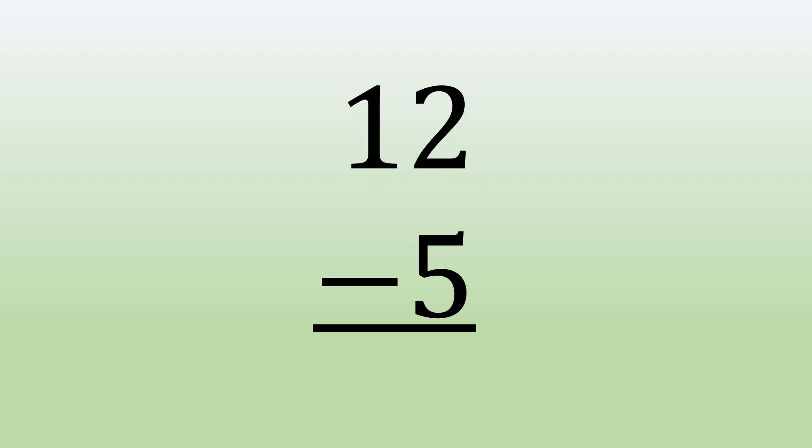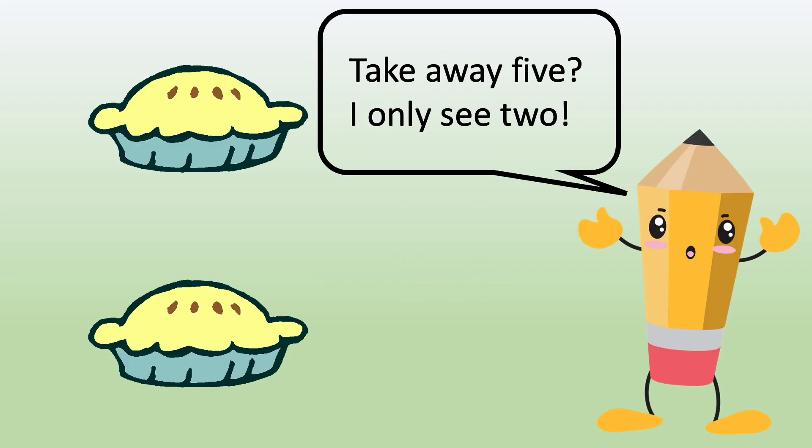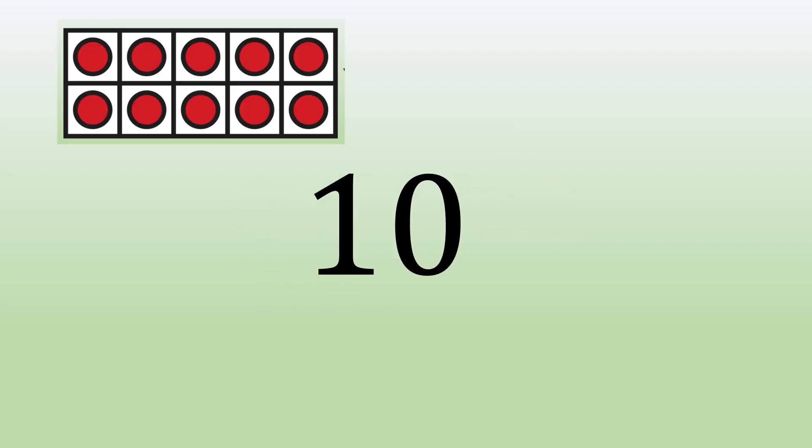When we subtract 12 minus 5, we start in the ones column. We know we can't take 5 of something away from 2. There just aren't enough. So we regroup.